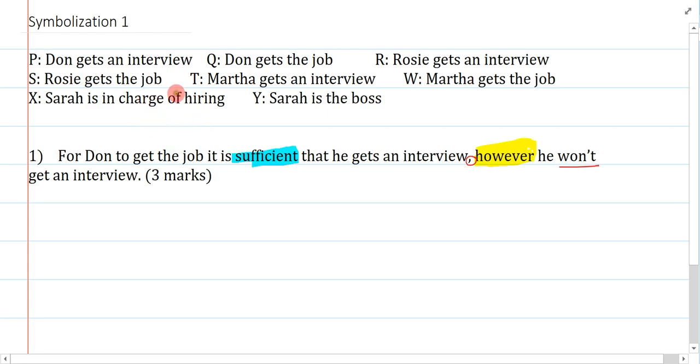For Don to get the job, I look around, Q, Don gets the job. It is sufficient that he gets an interview. Don gets an interview is P. However is and, he won't get an interview, so that's not P. This is pretty straightforward. The only thing that might throw us off is sufficient. We know that sufficient is a conditional. I just have to know, does sufficient introduce the antecedent or the consequent? It actually introduces the antecedent. So which is the sufficient condition?